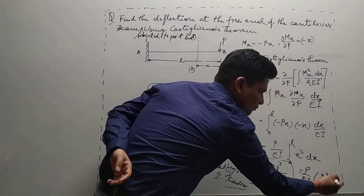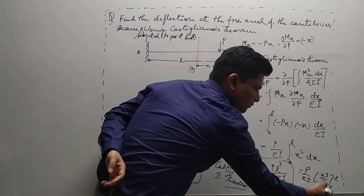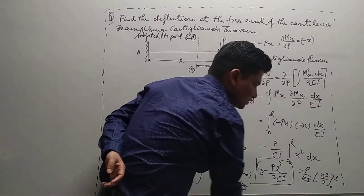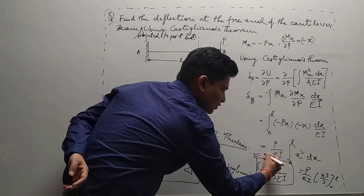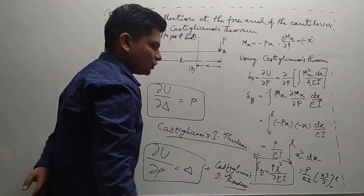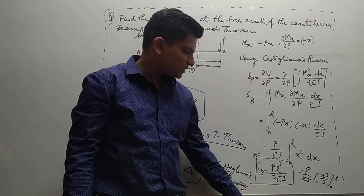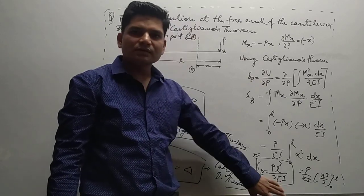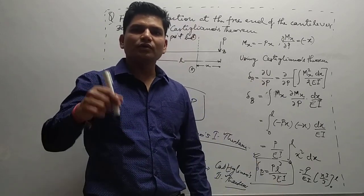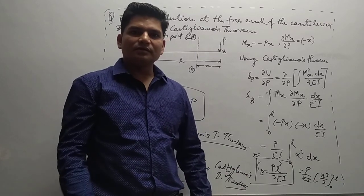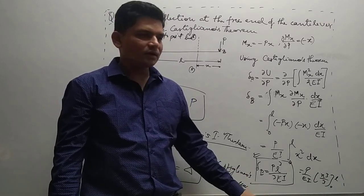After putting in the upper limit, this gives PL³ upon 3EI, and substituting the lower limit of 0, the final result is δ_B equals PL³ upon 3EI. This is the standard result when a cantilever beam is subjected to a point load at the free end.